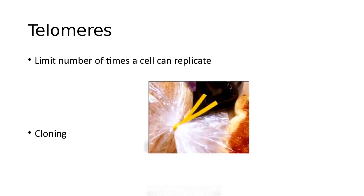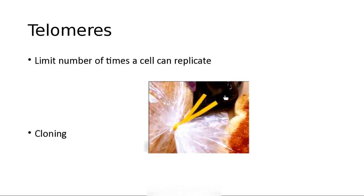A telomere is like the twist tie on a bread bag — every time the cell divides it gets a little shorter, and eventually the telomeres get too short to replicate and you die. This was largely supported by Dolly the sheep, the first cloned mammal, who died at a very young age. They said the telomere theory proved it — she was already old when she was born.